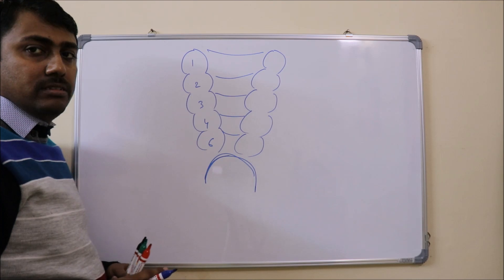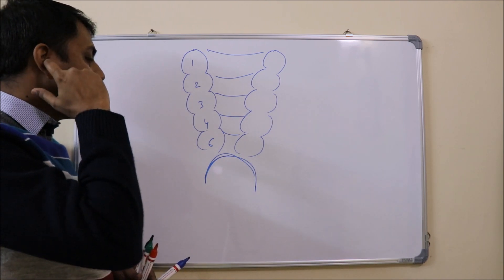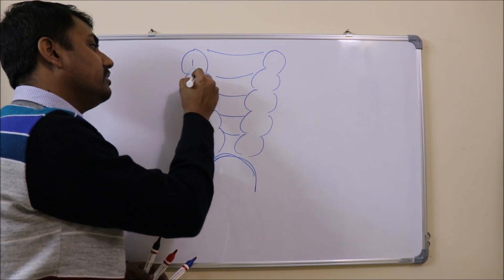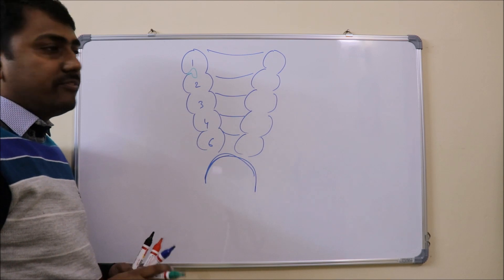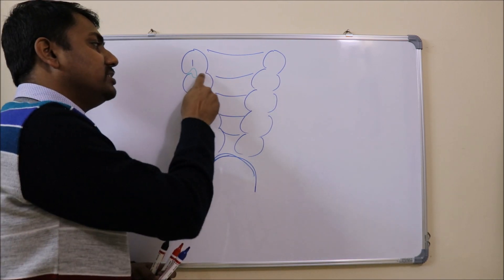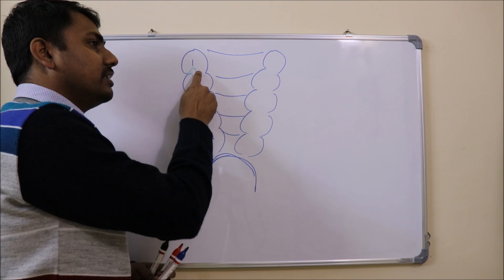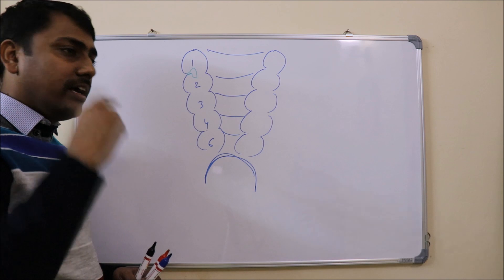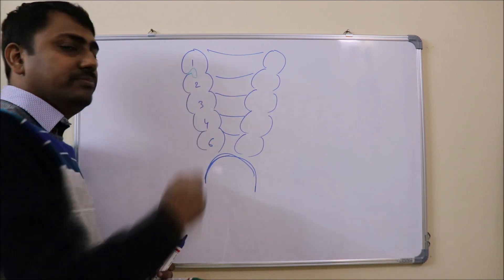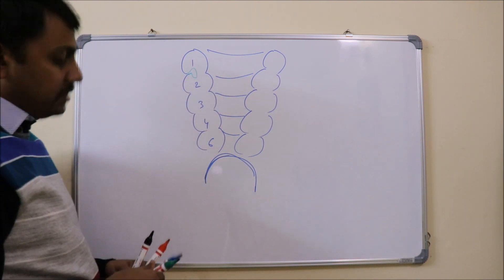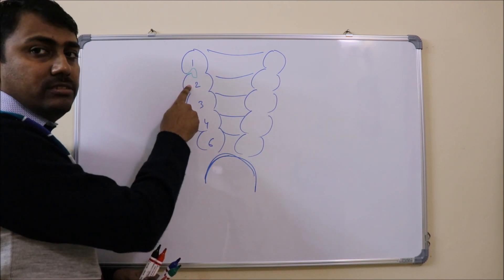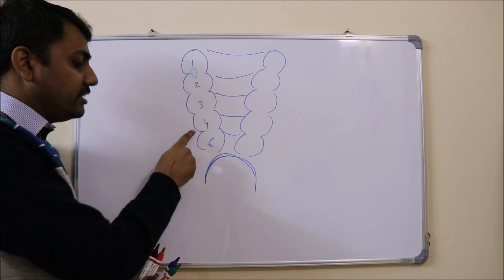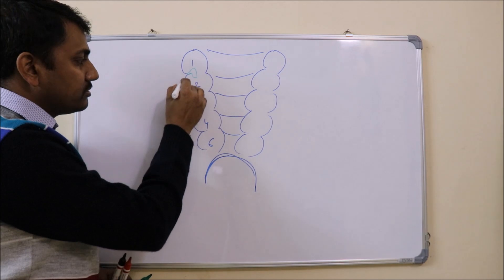Normally, the first pharyngeal cleft will form the external auditory canal. And with the help of the first pharyngeal pouch, which forms the epitympanic recess, it will completely form the middle ear and the external ear along with the auditory tube.